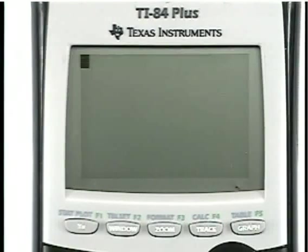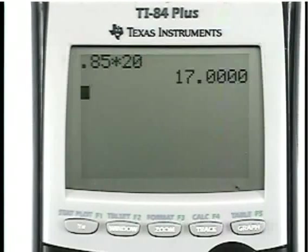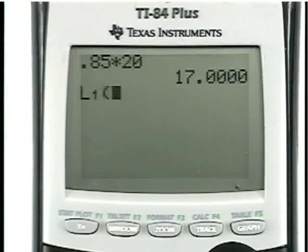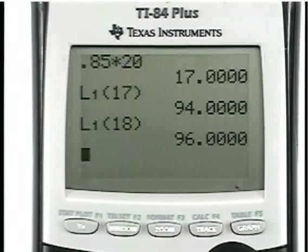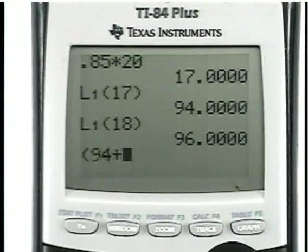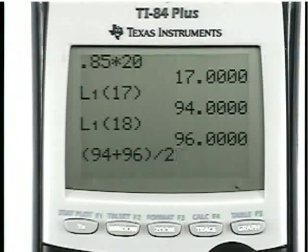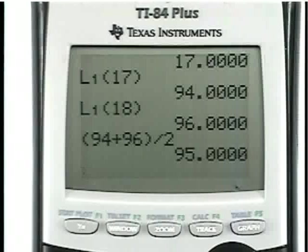I need the 85th percentile. 0.85 times 20 is 17. That's my location. Now, remember, we need to take the 17th and 18th value and average them. Well, I can tell the calculator L1, 17, it says, oh, that's 94. If there weren't values you couldn't figure out in your head, you could always just say, 94 plus 96 divided by 2 equals 95. So, that's what I would report as the 85th percentile.